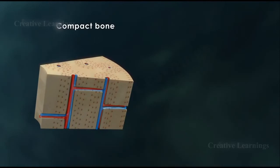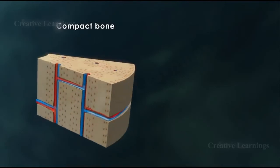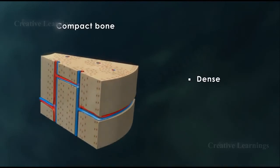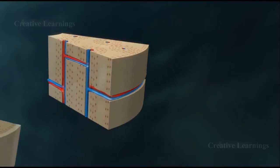This outer shell of the bone is dense, strong, and resistant to bending. Because of these characteristics, it makes up about 80% of the skeleton.